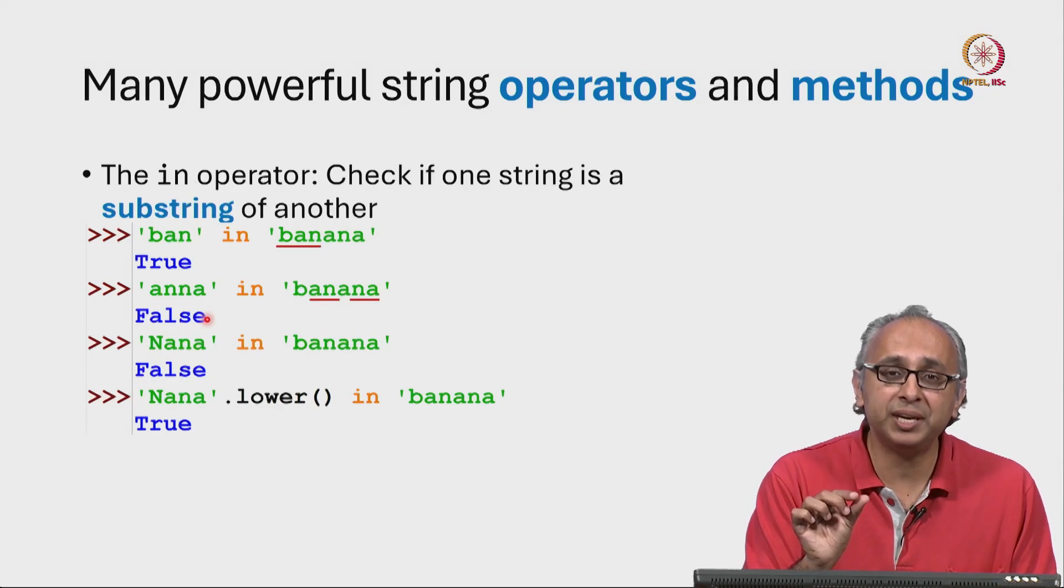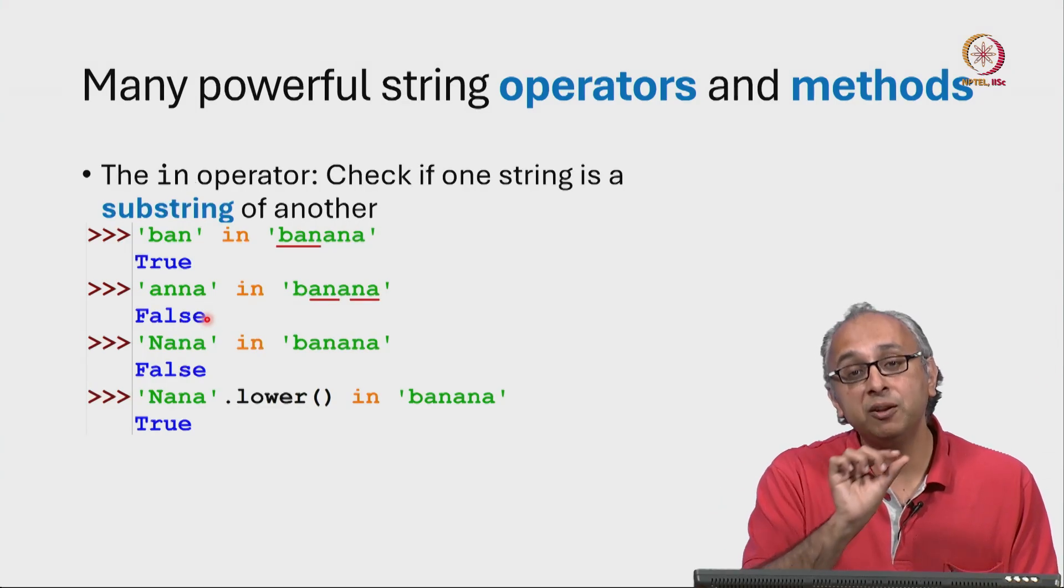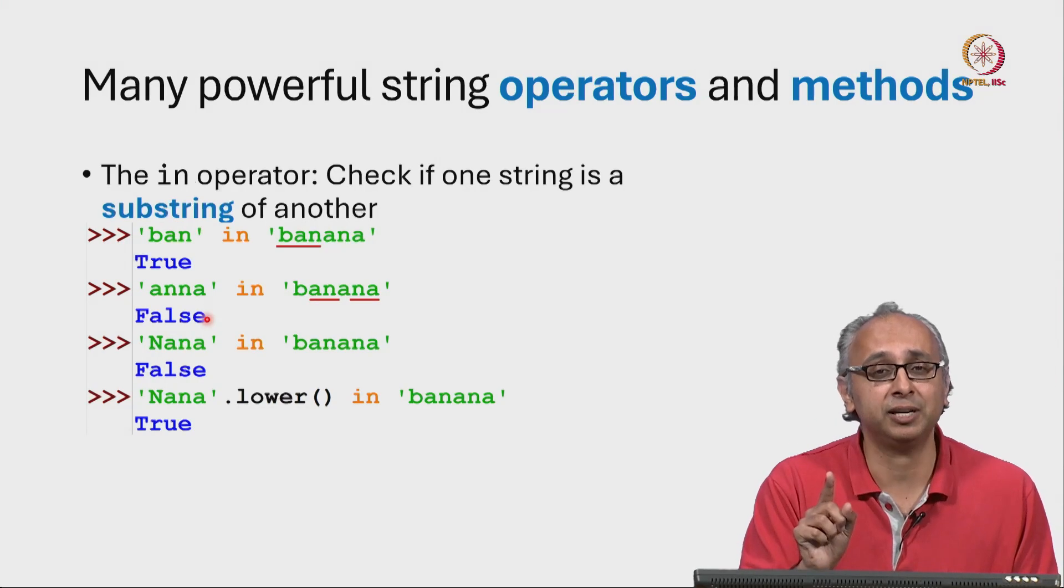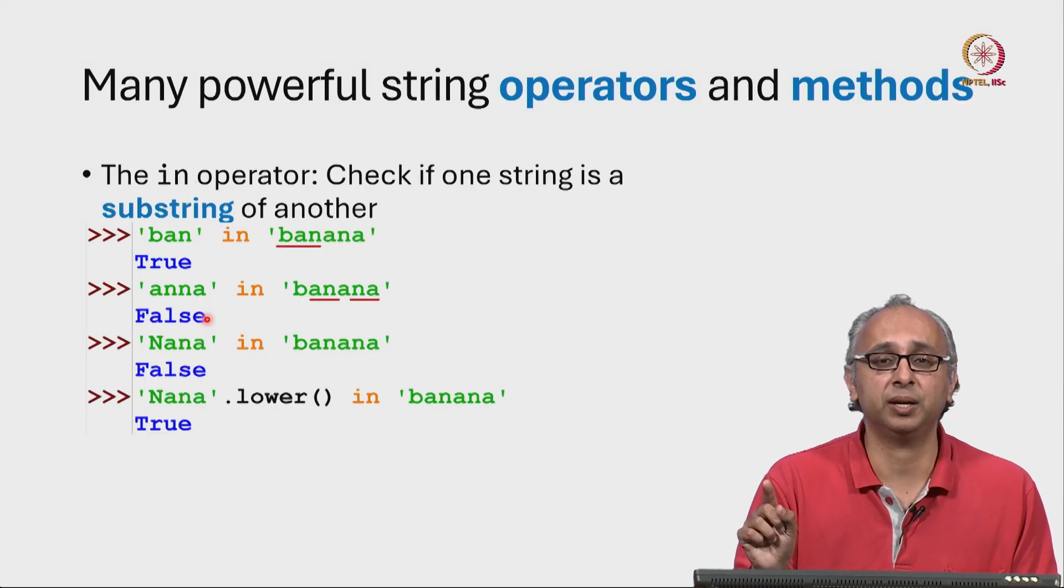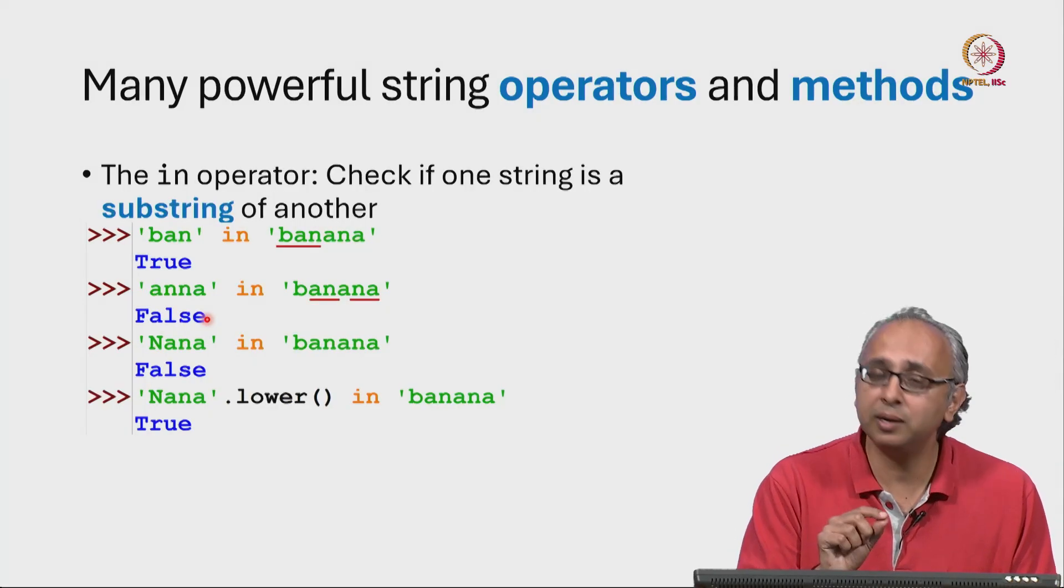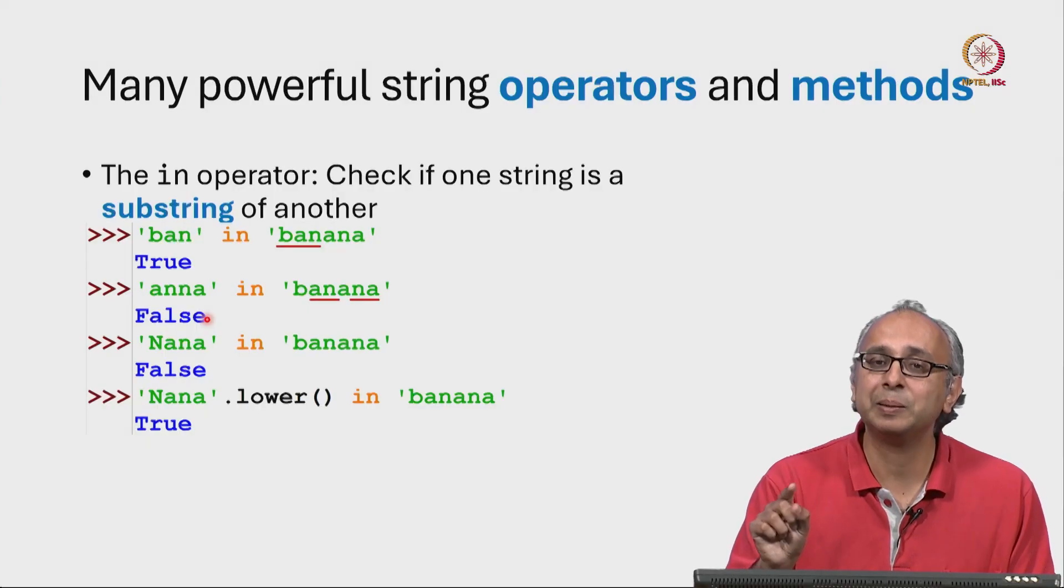We say that one string is a substring of another if it appears consecutively somewhere in that string. You cannot have gaps like this. So Anna is not in banana.